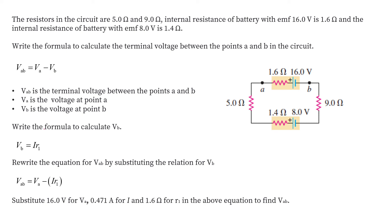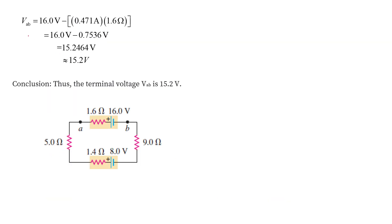Due to the internal resistance R1, there is a potential drop equal to I times R1. So we write V_AB equal to the battery voltage of 16 volts minus I times R1. Substituting the values, the terminal voltage across the 16-volt battery comes out to be 15.2 volts.